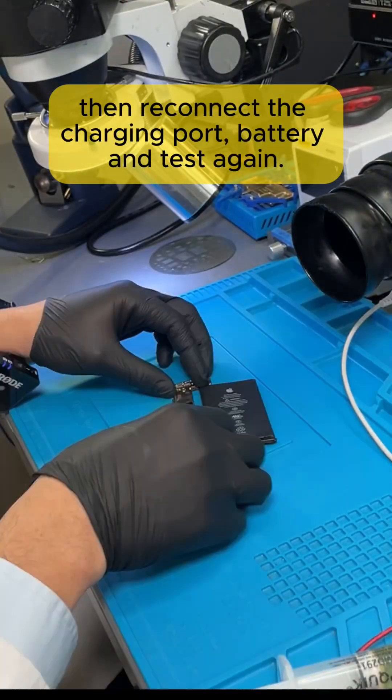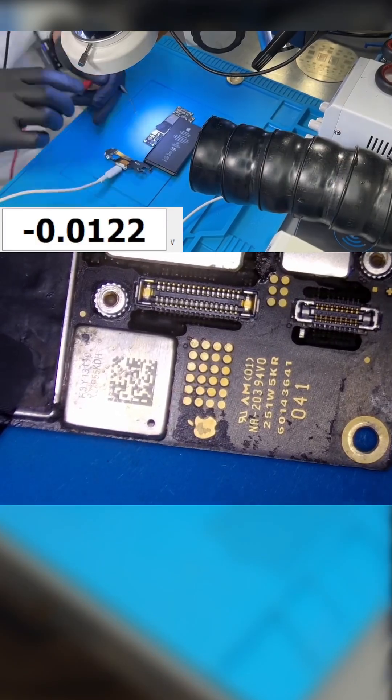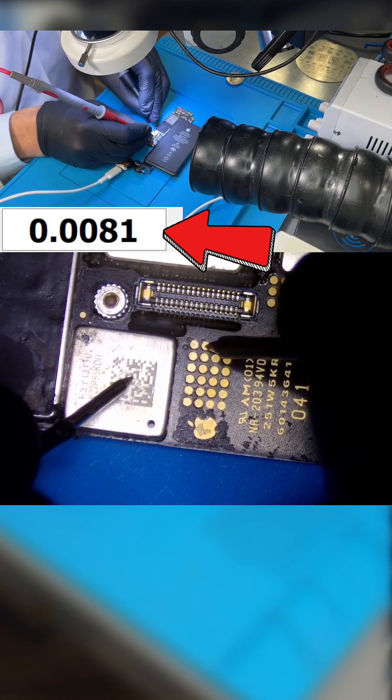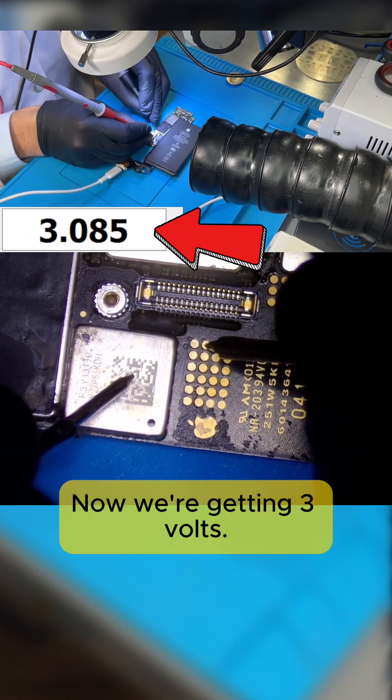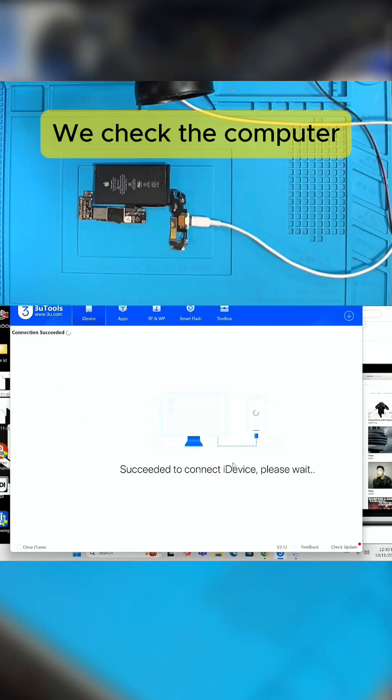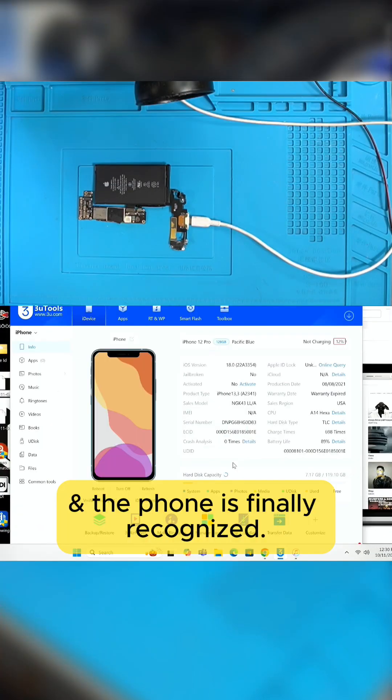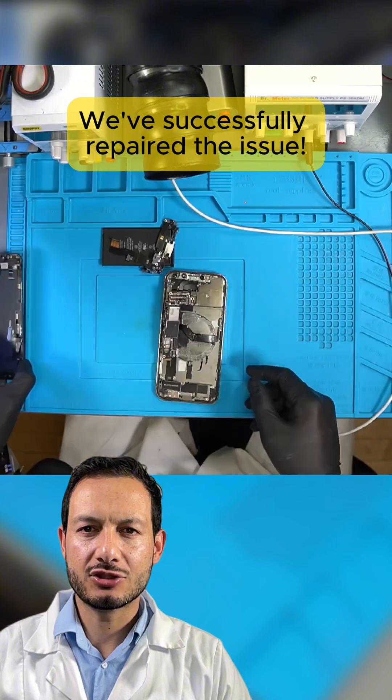Then reconnect the charging port, battery and test again. Now we're getting three volts. We check the computer and the phone is finally recognized. We've successfully repaired the issue.